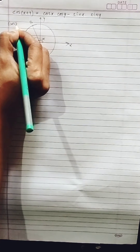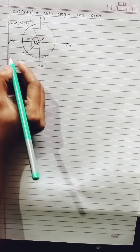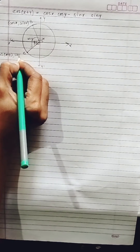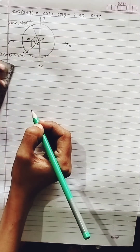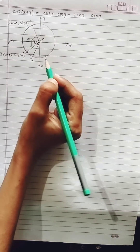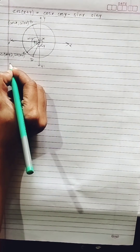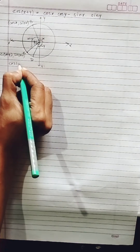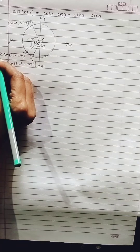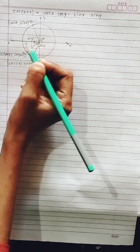The coordinates of point B on the unit circle — with angle x — are (cos x, sin x). For point C, with angle x plus y, the coordinates are (cos(x+y), sin(x+y)).